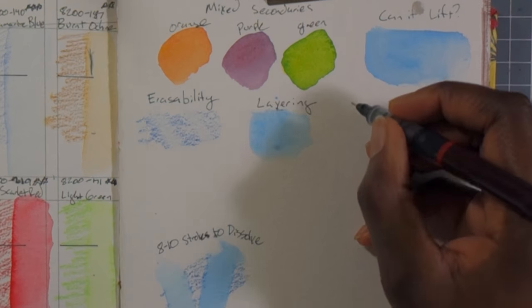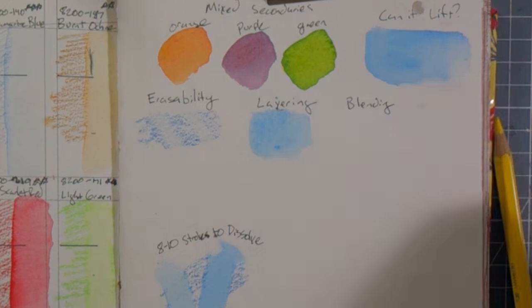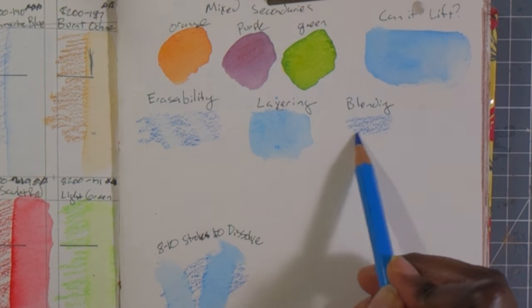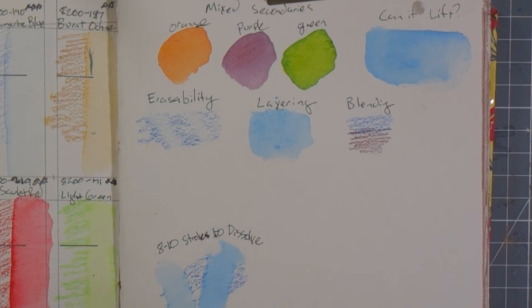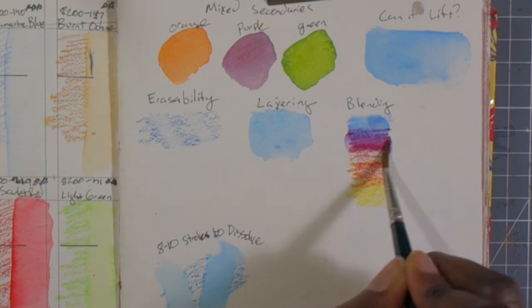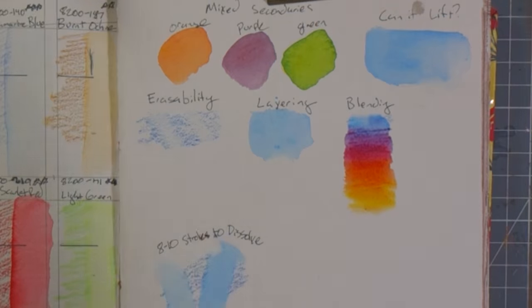How well do these colors blend? I'm just going to make a rainbow gradient with blue, purple, red, yellow, and orange. As you can see, they make a really pretty rainbow. And the colors blend into one another really well.